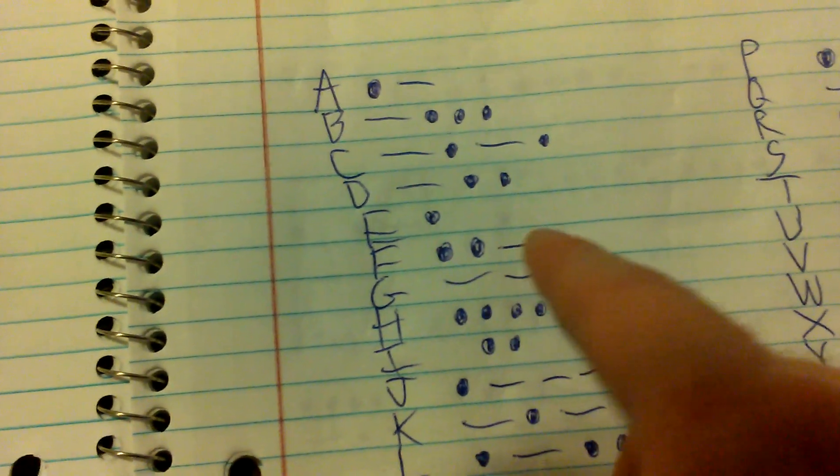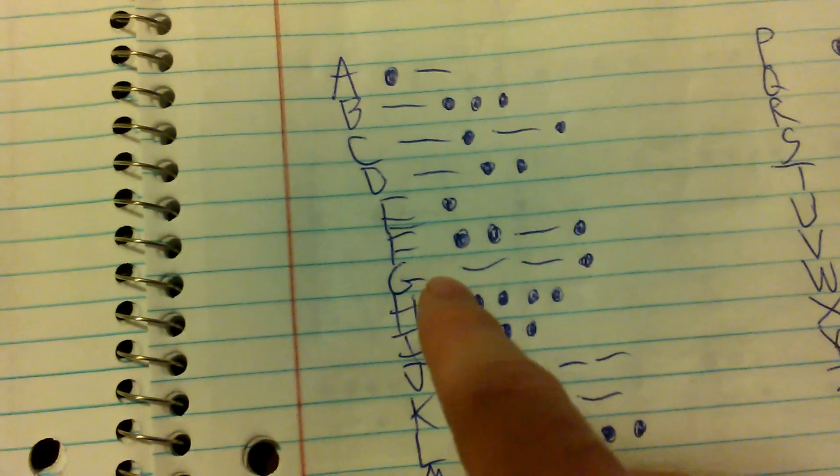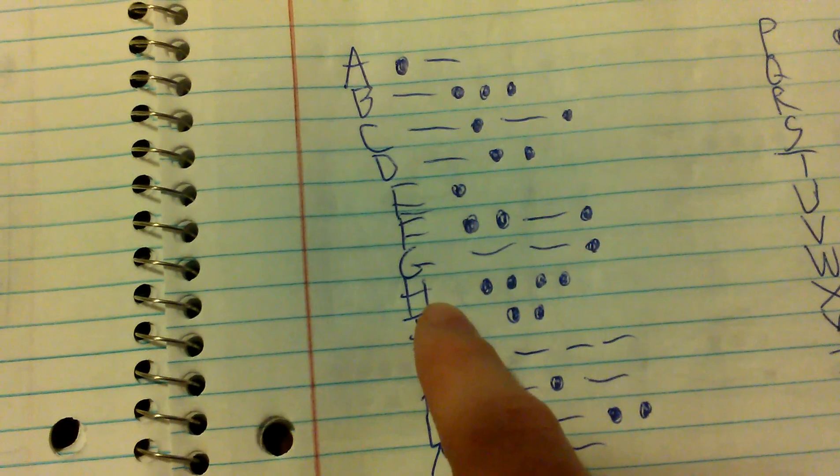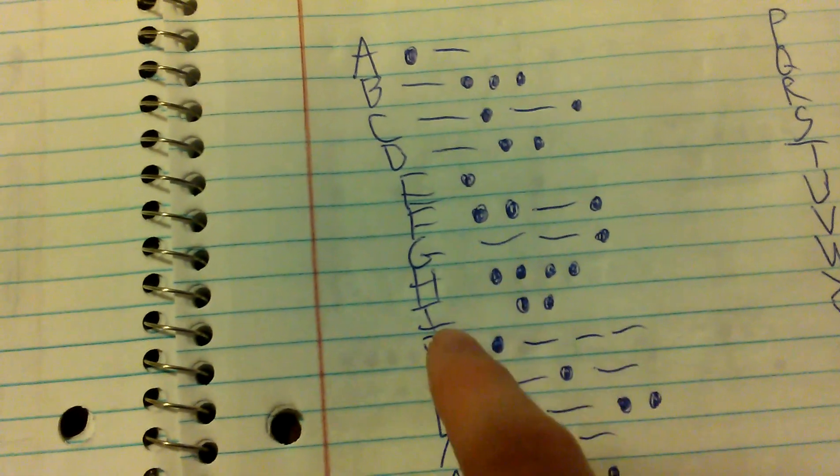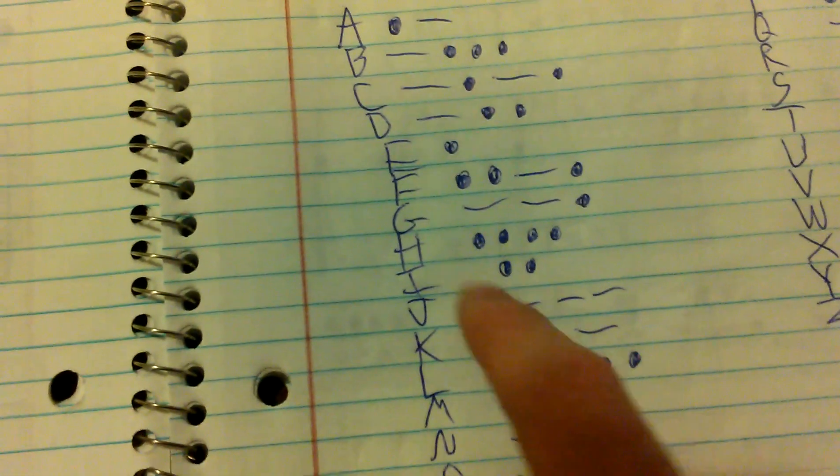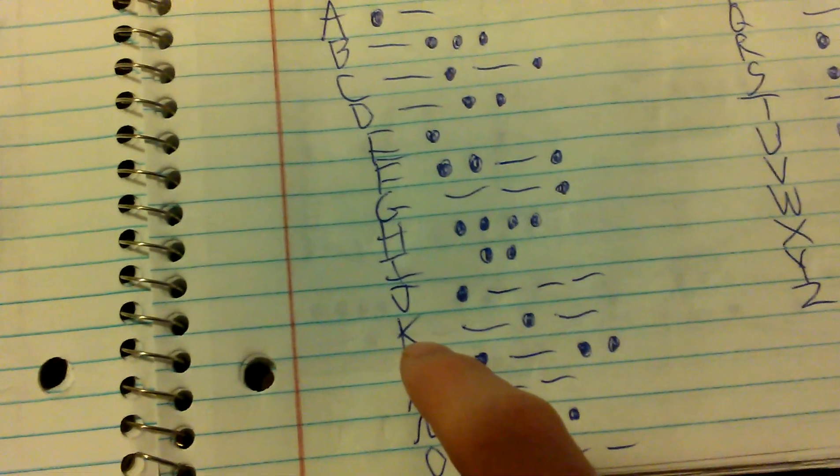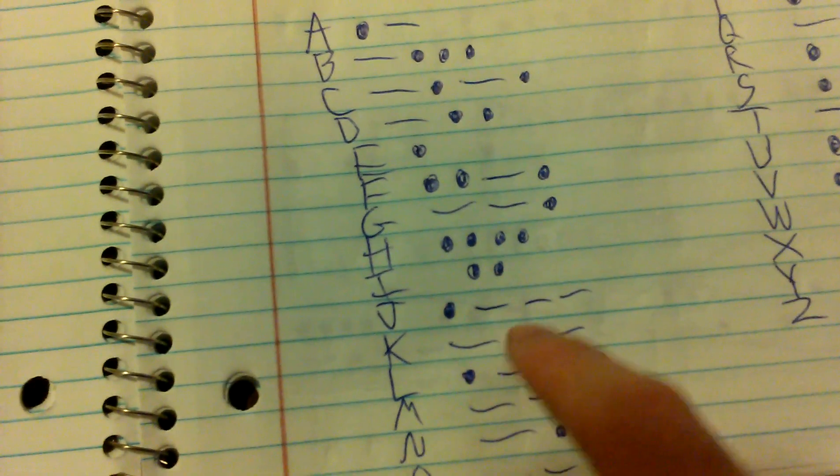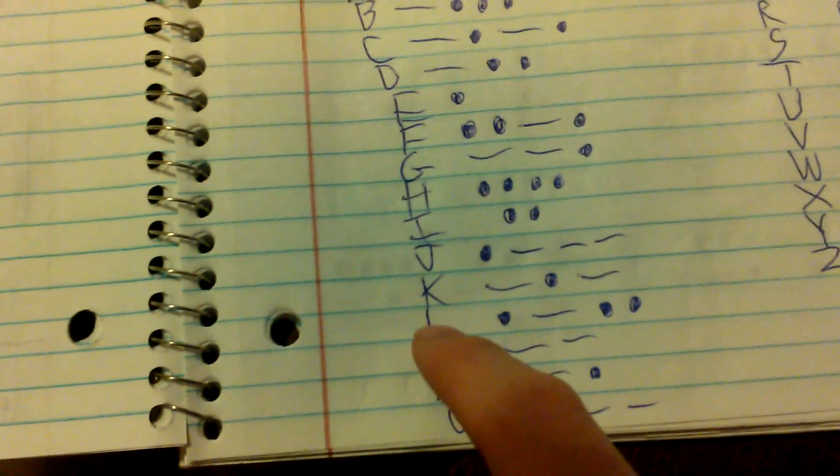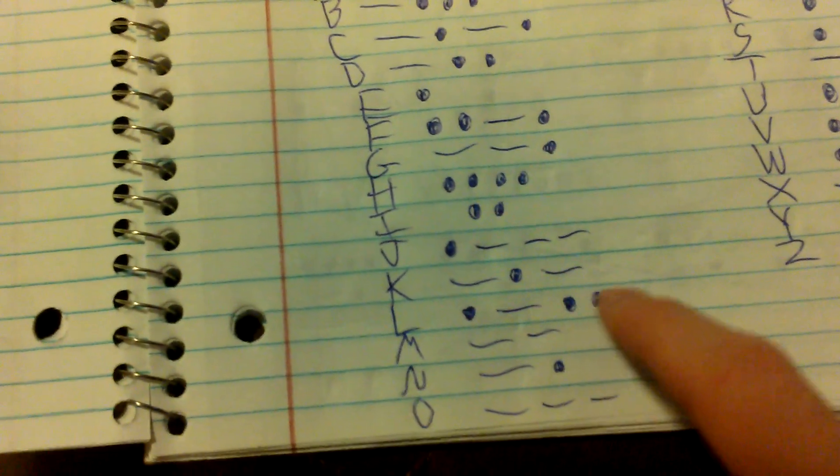An F is dot dot dash dot, G is dash dash dot, an H is four dots, an I is made up of two dots, a J is one dot and three dashes, a K is dash dot dash, and an L is dot dash dot dot.